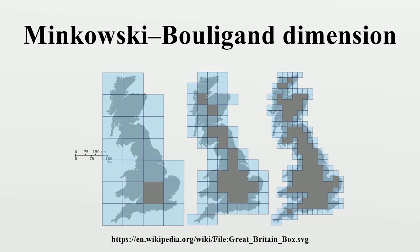More examples: the set of rational numbers, a countable set, has box dimension 1, because its closure has dimension 1. In fact, these examples show that adding a countable set can change the box dimension, showing a kind of instability of this dimension.